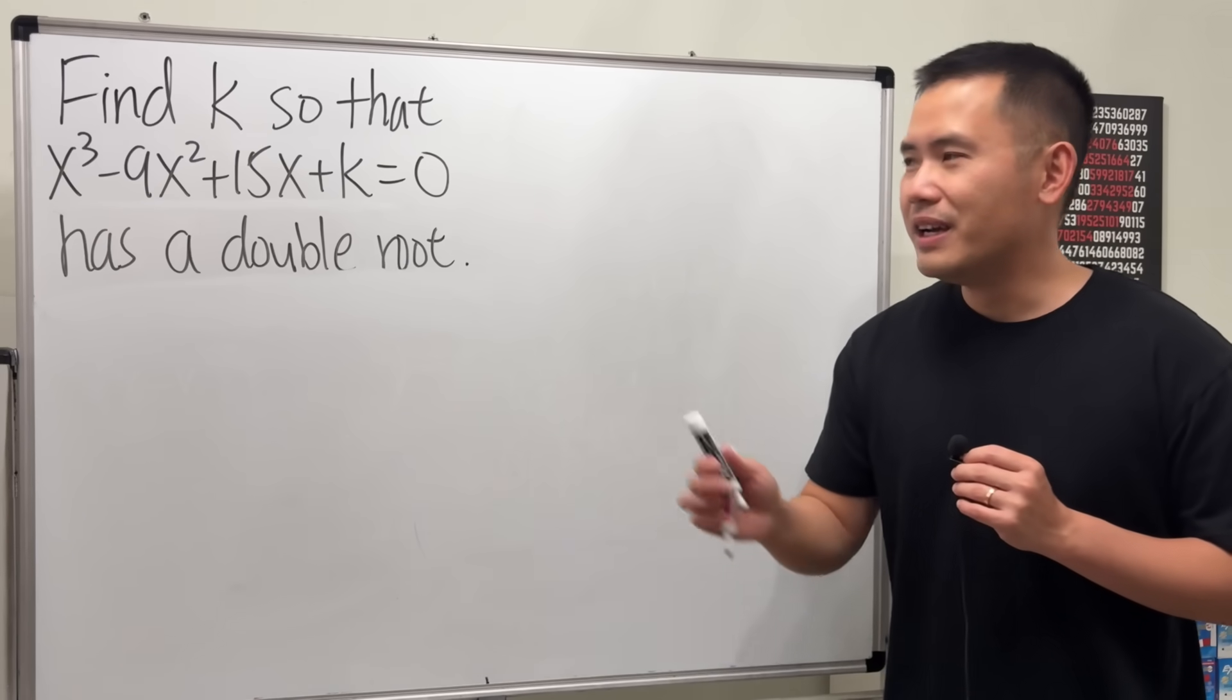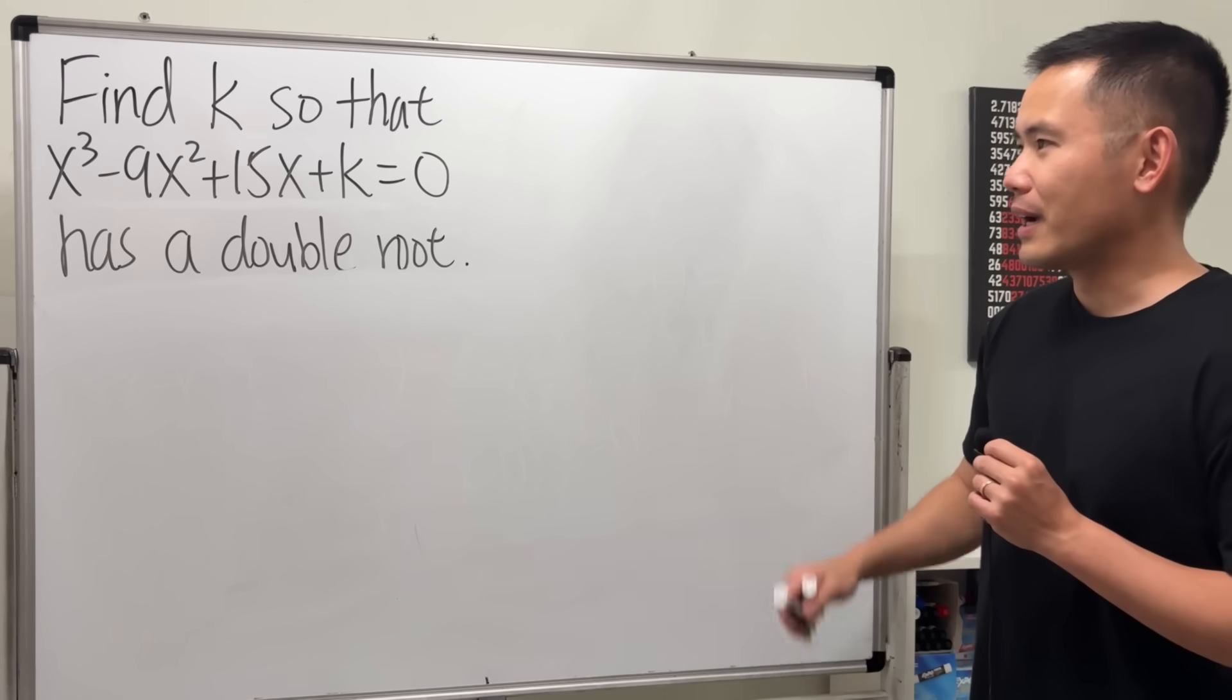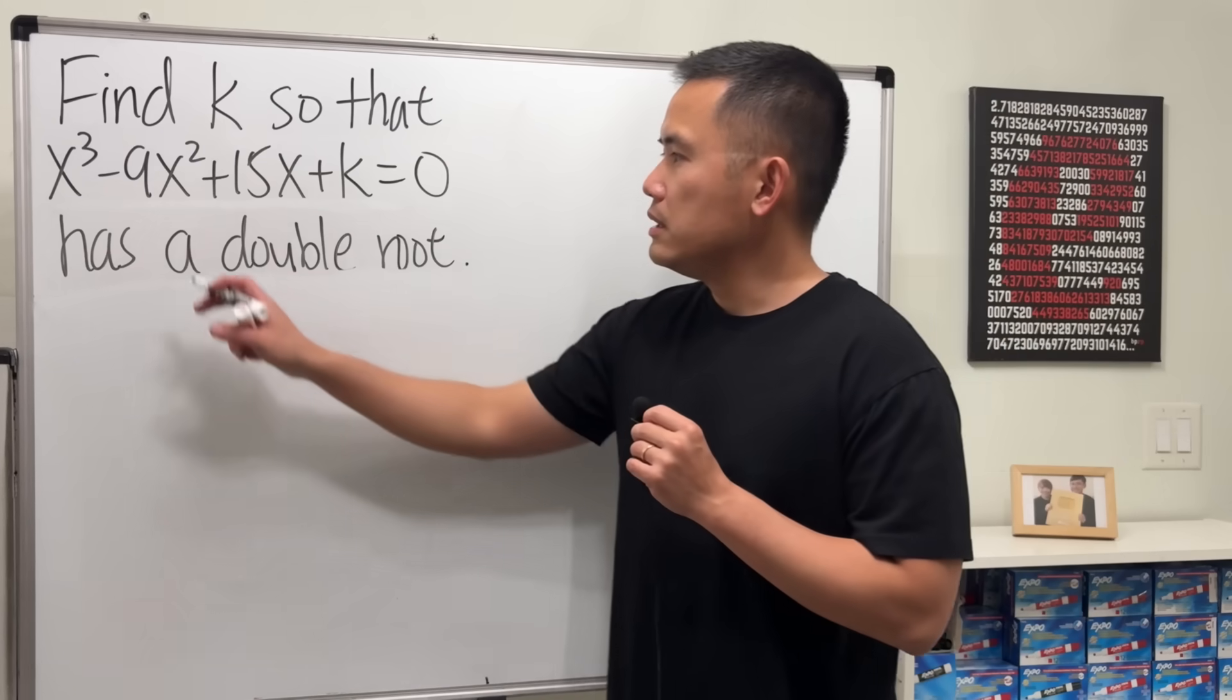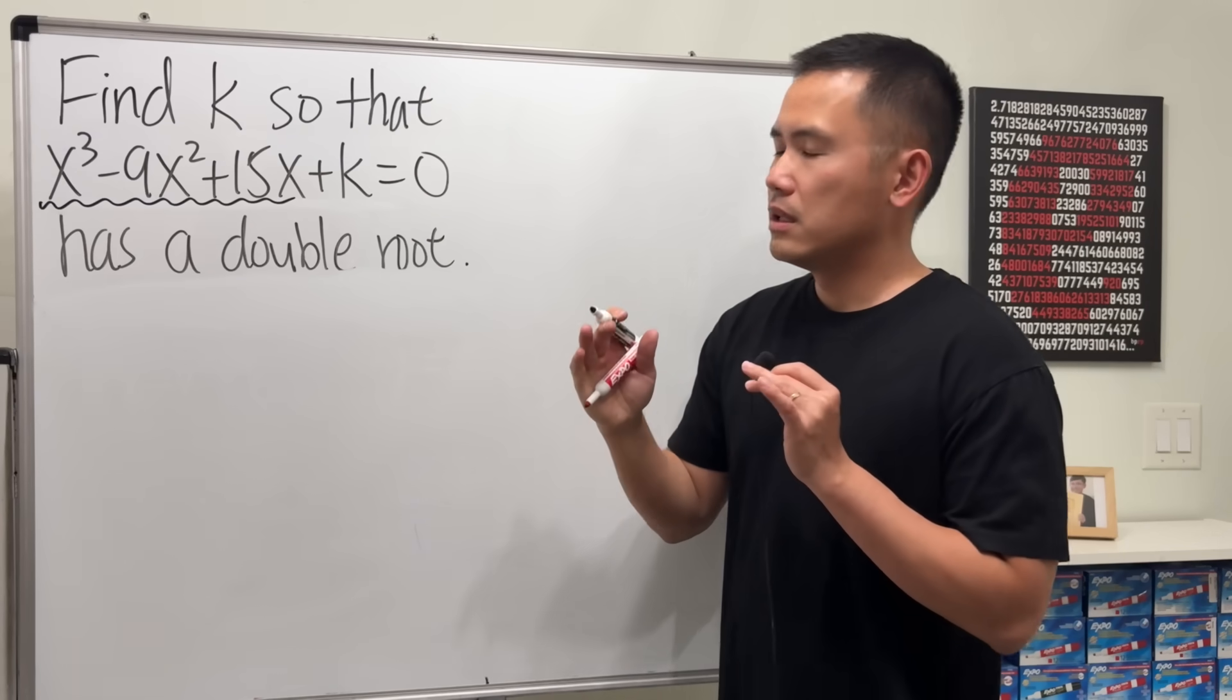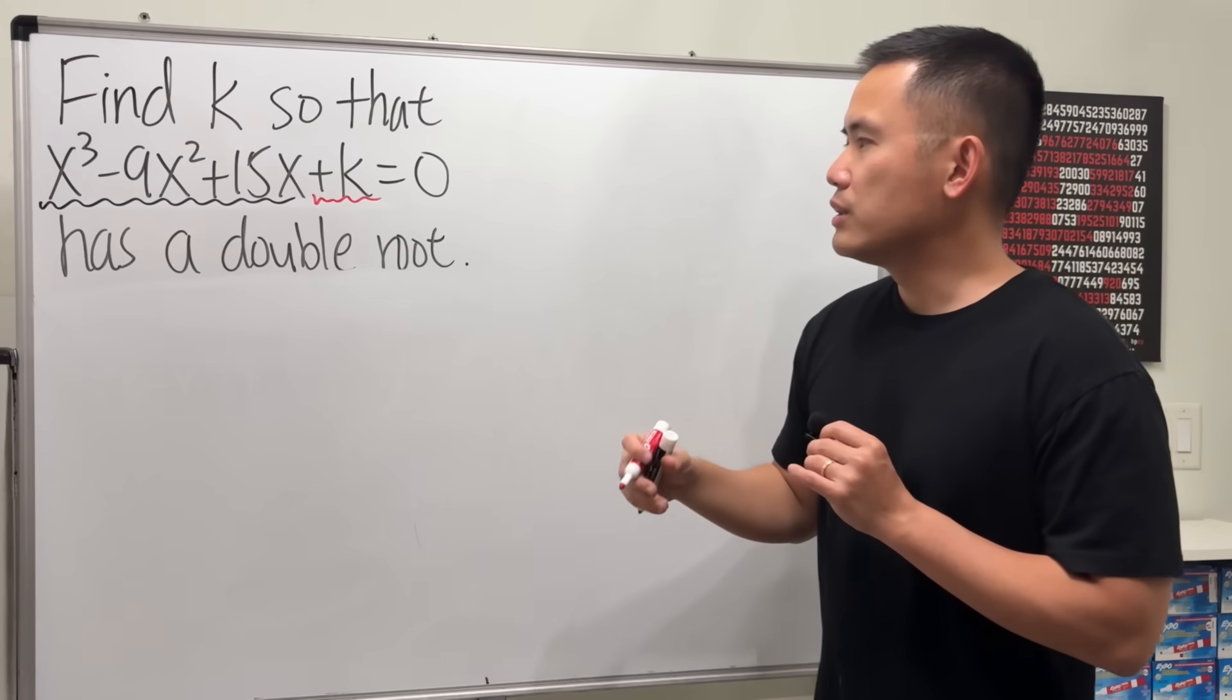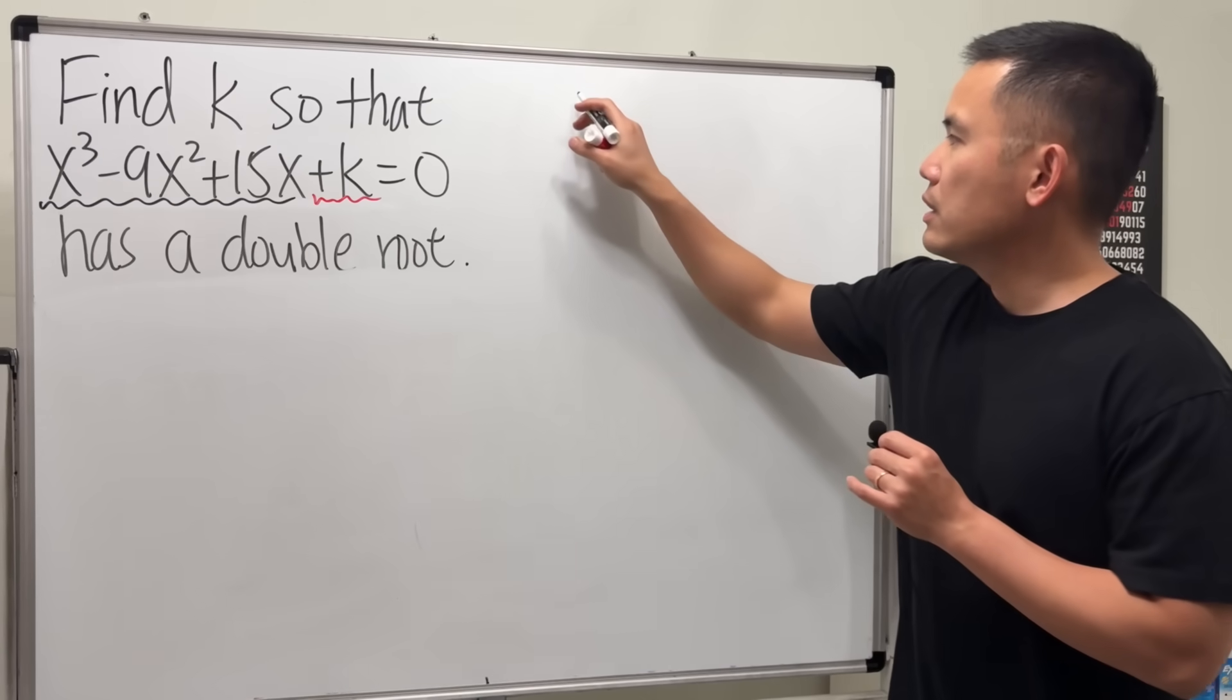Now how do we solve this? Well, you should pause the video and try this first. Done? Okay, here is how I will go about solving this. First, I'm looking at this as a function, but let's just focus on this part—it's the cubic part, and then the k right here is just like a vertical shift.